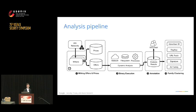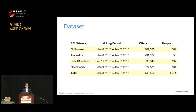From January of last year to January of this year, we collected over 450,000 offers that would have been bundled with users launching one of these applications — about 1,200 unique offers. Some networks are larger than others: Open Candy yielded about 77,000 and Amonetize was one of the largest at about 230,000 different potential offers.